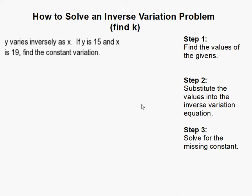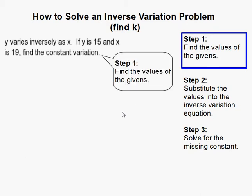How to solve an inverse variation problem where we need to find k, which is called the constant variation. Like always, you should find the given values and write them down. We're given y is equal to 15 and x is equal to 19.